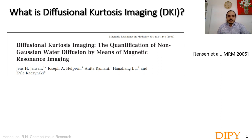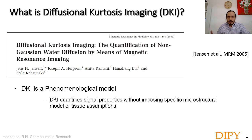So what is Diffusional Kurtosis Imaging? Diffusional Kurtosis Imaging, or DKI for short, was a diffusion MRI technique first proposed by Jan Jensen in 2005. This technique is basically a phenomenological model because it quantifies signal properties without imposing specific microstructural models or tissue assumptions.